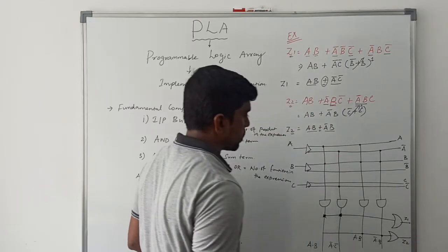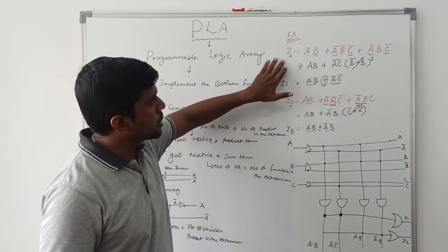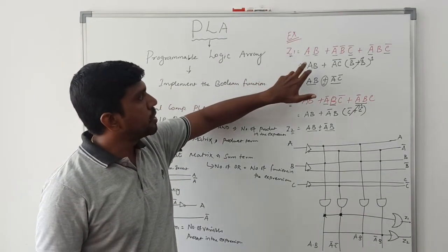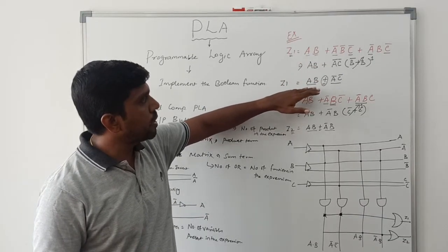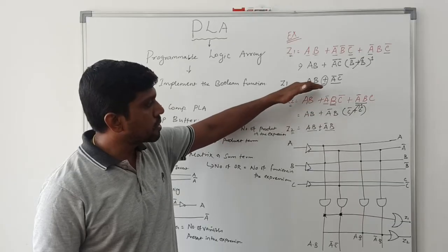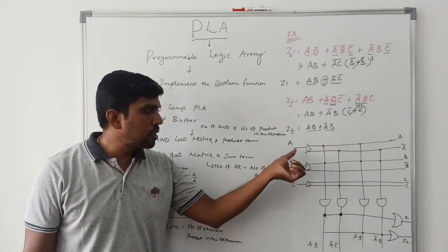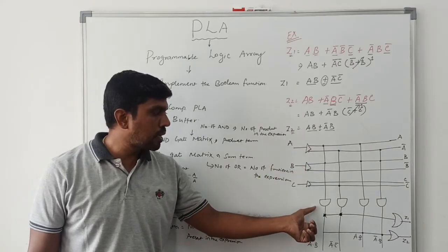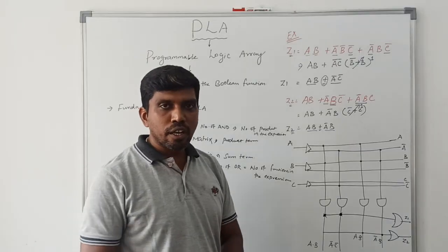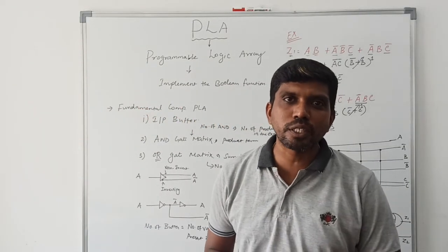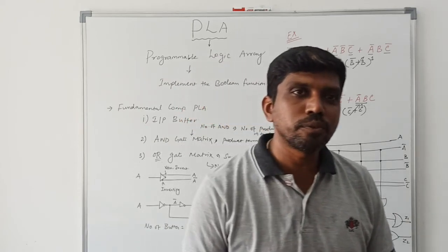Z1 and Z2 are the outputs of the Boolean expressions. To implement PLA: first read the expression and simplify if possible, then convert the simplified terms into the PLA structure by drawing the input buffer, then the AND gate matrix, and finally the OR gate matrix. I hope you understand the concept well. If you are watching for the first time, kindly subscribe and support us to make more videos. Thank you.